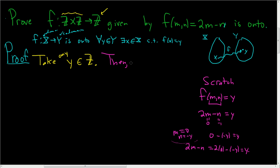So then, (0, negative y), this is an ordered pair, and both components are integers, so this is certainly in the direct product. So this is the x in the definition.